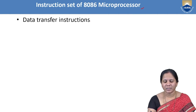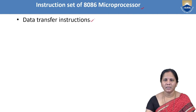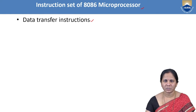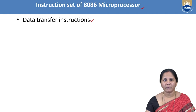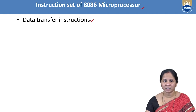The first classification is data transfer instructions. In this classification, we have discussed about different data transfer instructions like move, push, pop, in, out, and exchange. We have also seen the function of each instruction and the general format of each instruction.